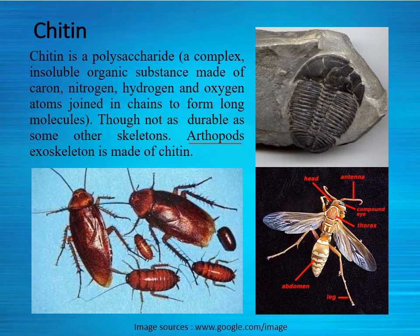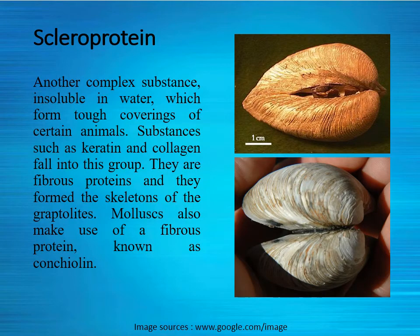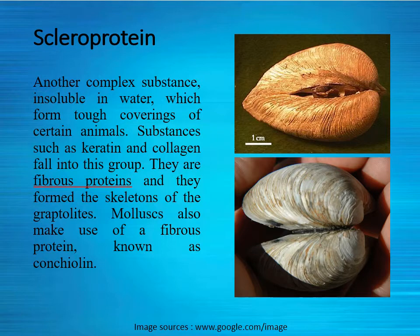Next is scleroprotein — another complex substance including keratin and collagen, which fall into this group. These are fibrous proteins that form the skeletons of graptolites, an extinct animal group. Molluscans also have this fibrous protein as part of their hard parts.